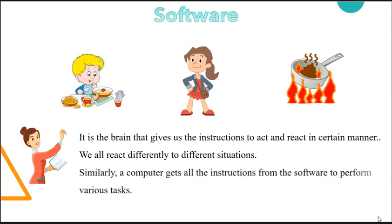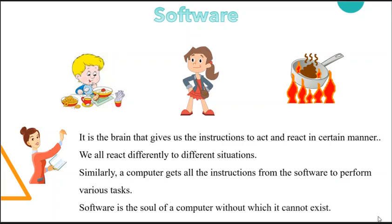It is the brain that gives us the instructions to act and react in a certain manner. We all react differently to different situations. Similarly, a computer gets all its instructions from the software to perform various tasks. Software is the soul of a computer — without it, the computer cannot exist. A computer cannot do anything for you without software. Software programs instruct the computer about the actions to be performed so as to get the desired output.